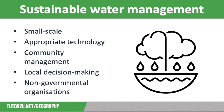Finally, sustainable water projects involve non-governmental organisations. NGOs have no government funding and rely on donations — such as Oxfam and WaterAid — who both work across LICs and NEEs to improve access to safe and reliable water supplies. NGOs are important here as they give local communities the support and skills they need to get their sustainable water projects up and running.